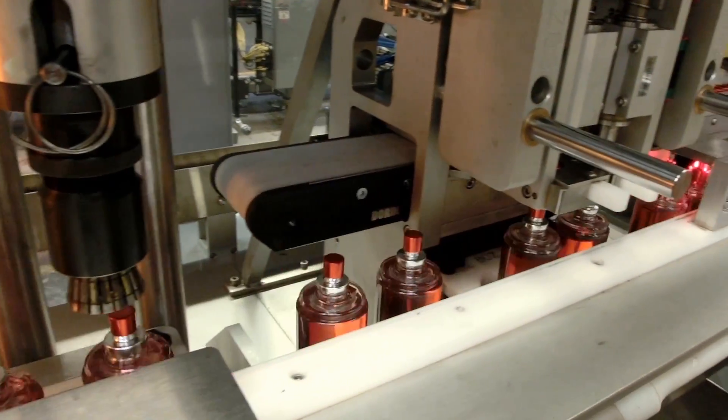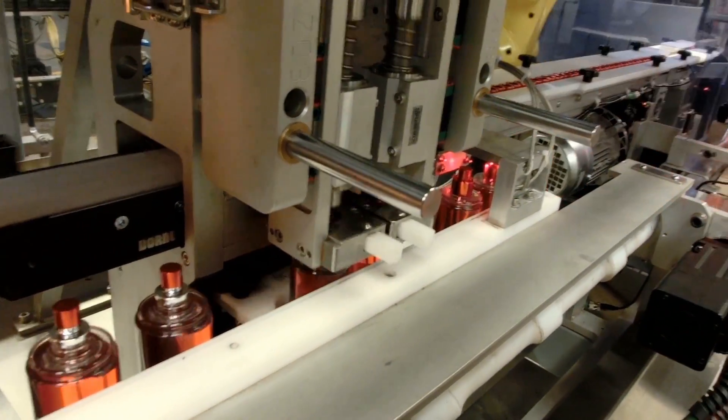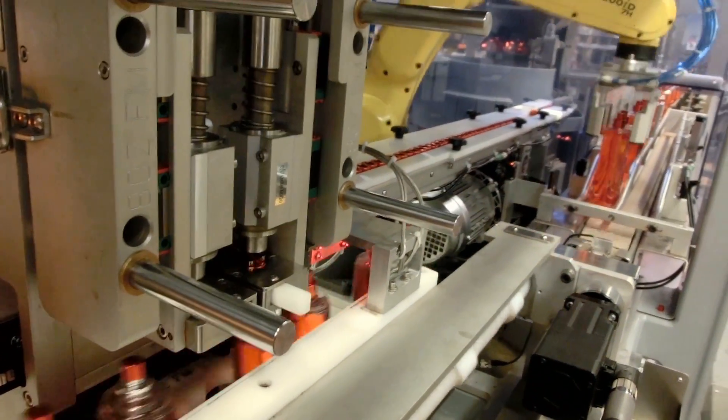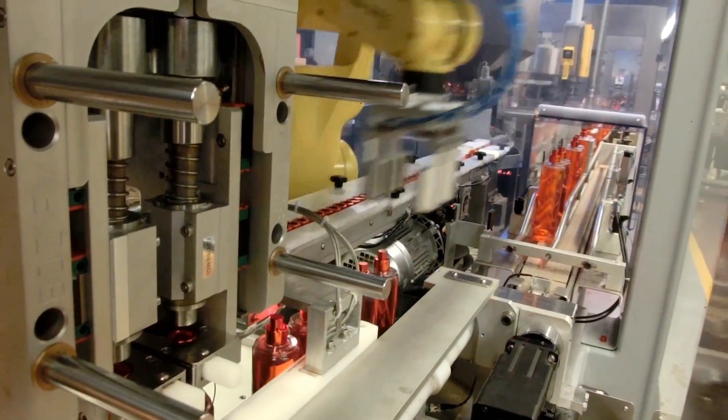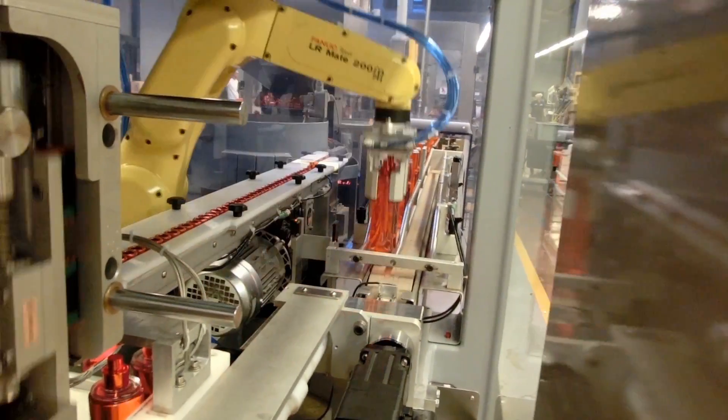At the end of the process sits a second LR-Mate 200ID robot which picks the bottles two at a time and places them onto an outbound conveyor, and the bottles are fed to a downstream machine.